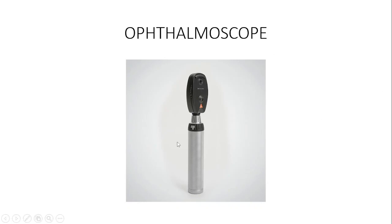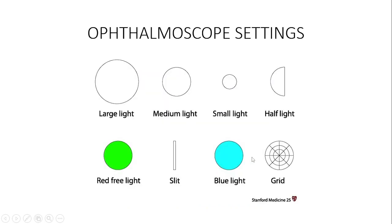The ophthalmoscope settings — when you want to do fundoscopy there are several lights and designs on the ophthalmoscope which you have to take note of. Use the large light when the pupil has been dilated with mydriatics and it is big. Use the medium light when the individual has not had any mydriatics in the eye.